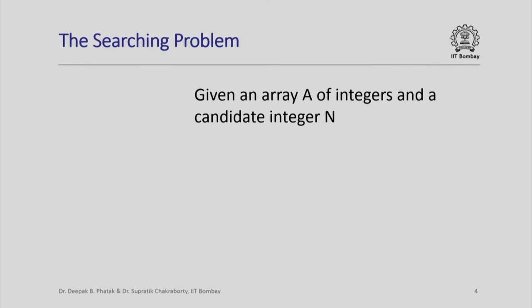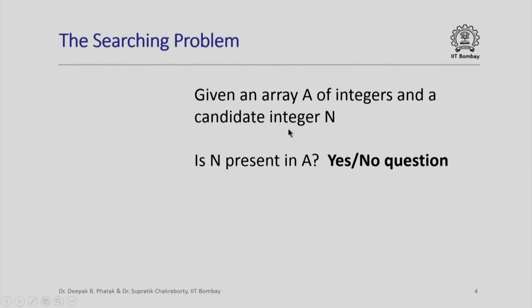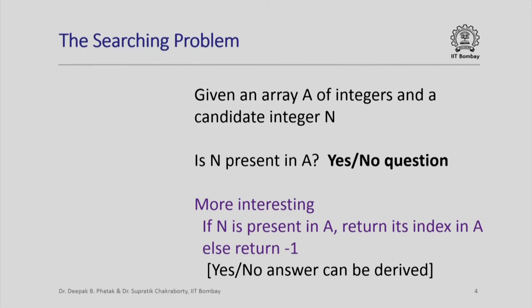So what is the searching problem? Suppose you are given an array of integers and a candidate integer n, and you are asked: is this integer n present in the array a? So it is really a yes/no question. A more interesting version is that if n is present in a, then return its index in the array a, otherwise return minus 1. Once you know the return value, you can figure out the yes/no answer as well.